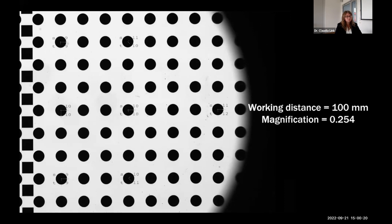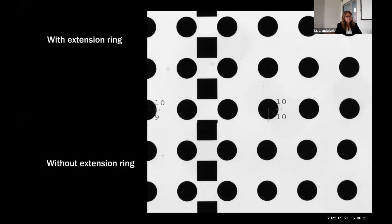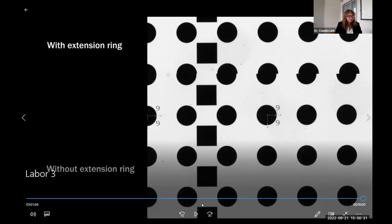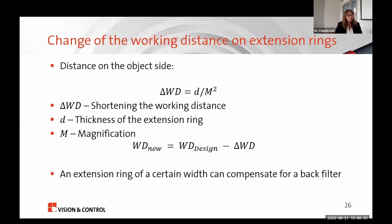For the TO44/11.0, the new working distance with a 1 mm extension ring is 100 mm — about 70 mm less than without the extension ring. The magnification also slightly increases. There is also a formula where you can calculate the shortening of the working distance for an extension ring of thickness D. Notably, you can use an extension ring of a certain thickness to compensate for the working distance shift caused by a large filter.